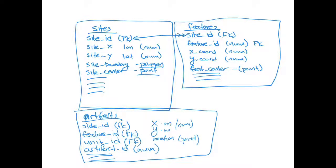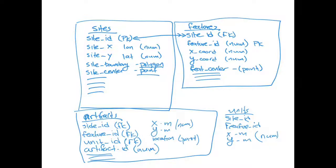And then we have our units table, which again has a site ID and a feature ID perhaps. Then any other attributes associated with the unit — so that might be the XY location of the unit in meters, which would be numeric. But again, you might have a unit datum that is a point, providing a geographic or geometric object representing the location of that unit. And then any other attributes such as depth and levels within our excavation units.